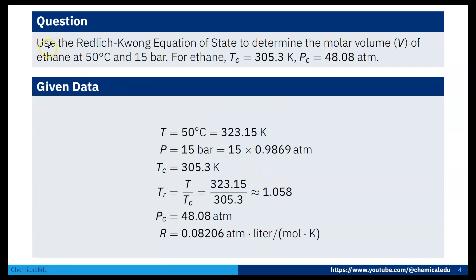So what are the data given? T is 50 degrees centigrade, which converts to 323.15 K. P is 15 bar, and 1 bar equals 0.9869 atm, so we can convert that.